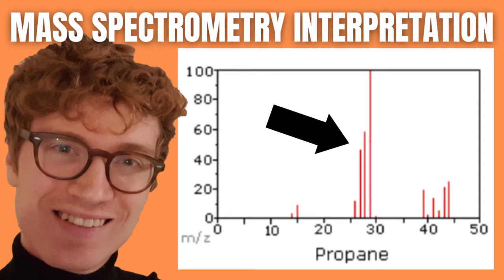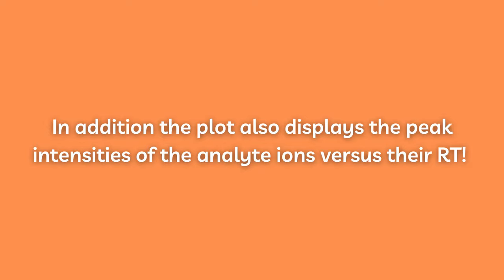The abundances of the ions measured during the analysis of a sample by LC-MS are plotted as a total ion chromatogram, TIC. The plot displays the peak intensities of the analyte ions versus their RT. Further, each point in the chromatogram is associated with the mass spectrum which depicts the ion abundances versus the measured m/z values.